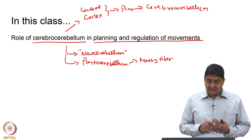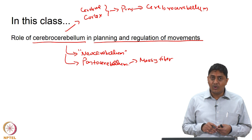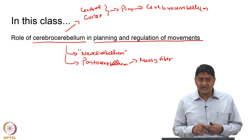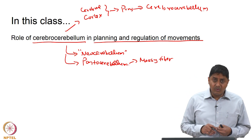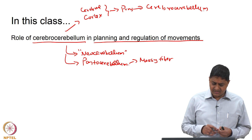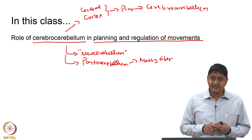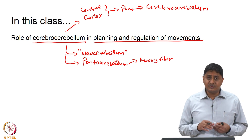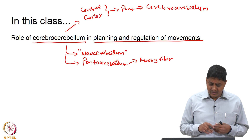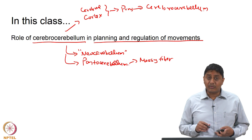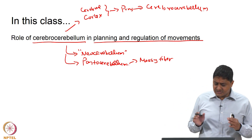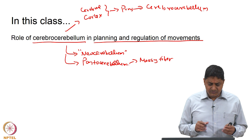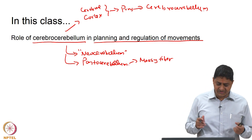For a long time it was believed that the cerebrocerebellum, and the cerebellum in general, is a motor organ of the brain — its main function being to plan, regulate, and modulate movements. This view is now being challenged, as the cerebellum is also thought to perform cognitive and other functions. However, in this course we will restrict our discussion to the movement-related functions of the cerebrocerebellum.